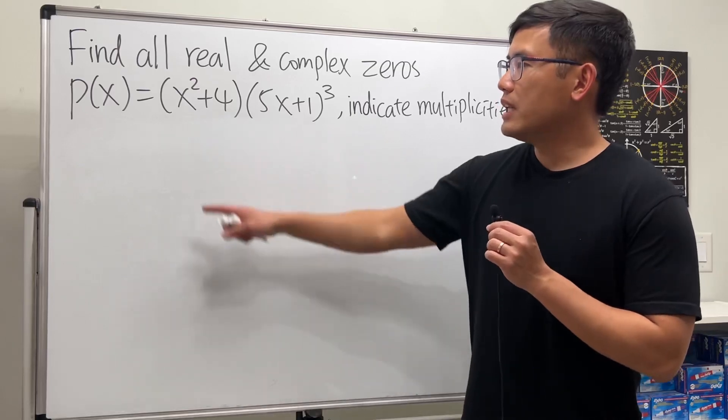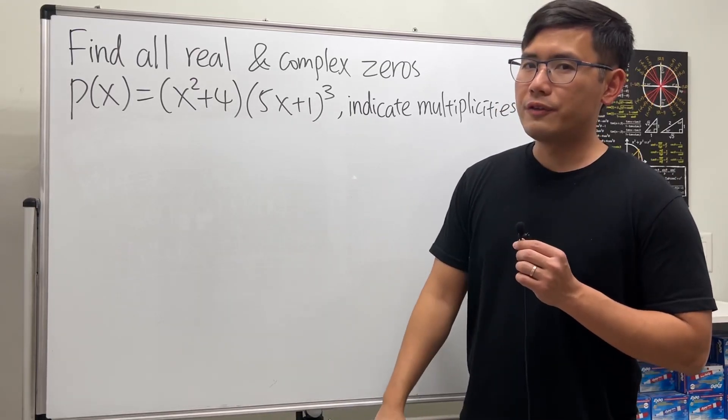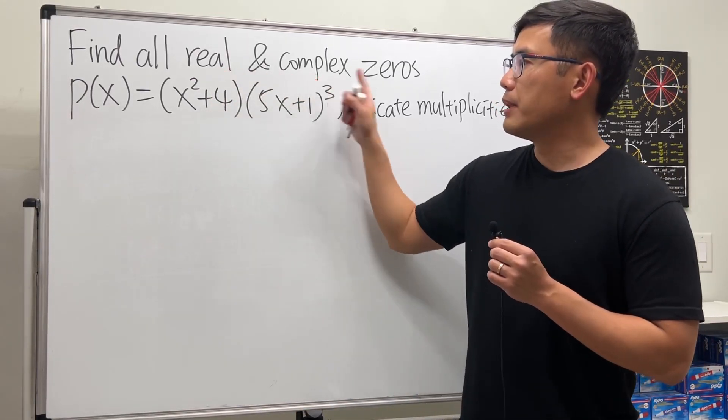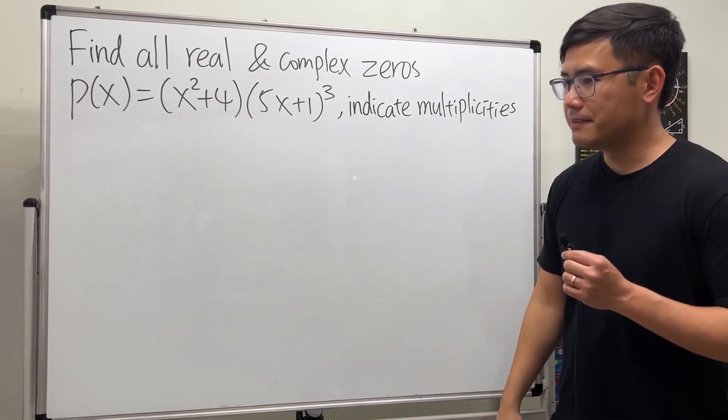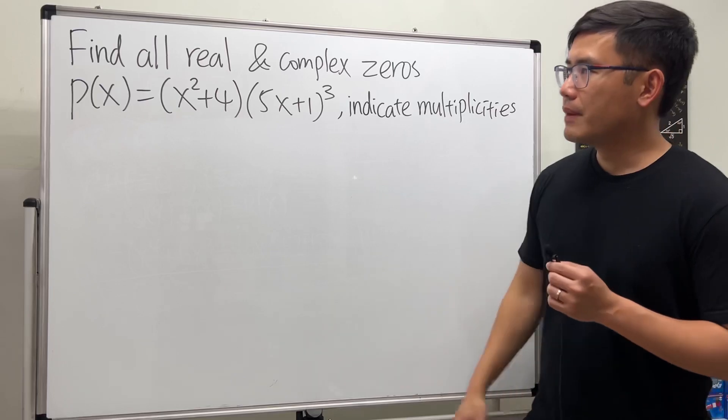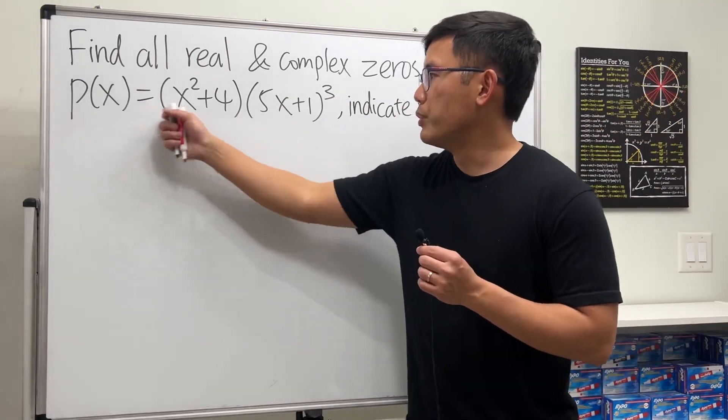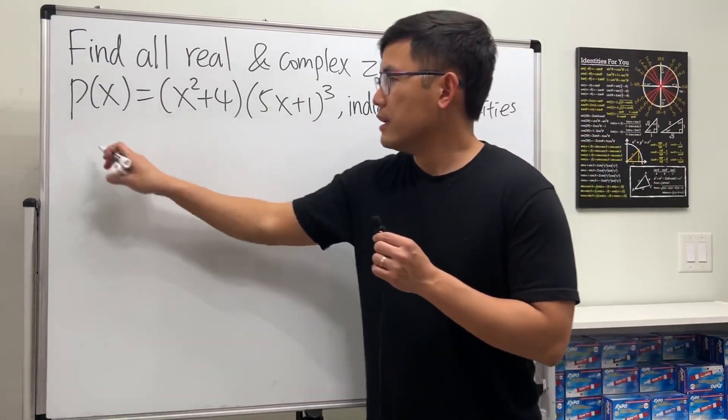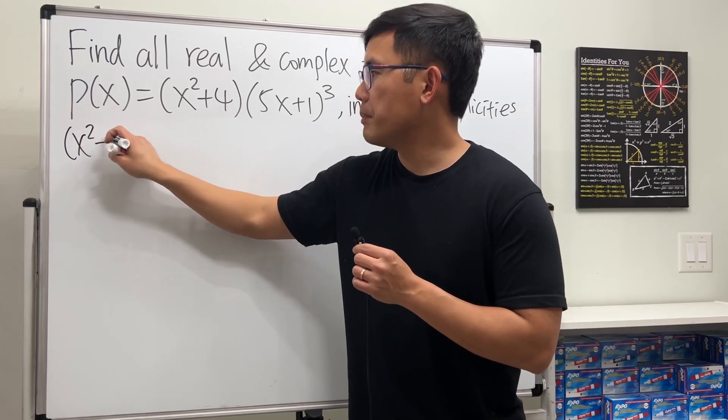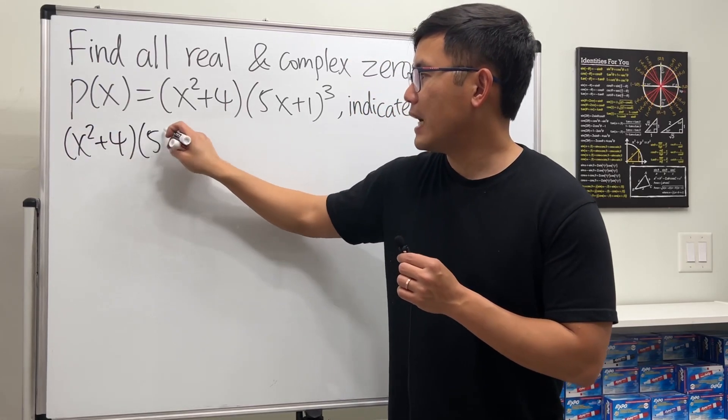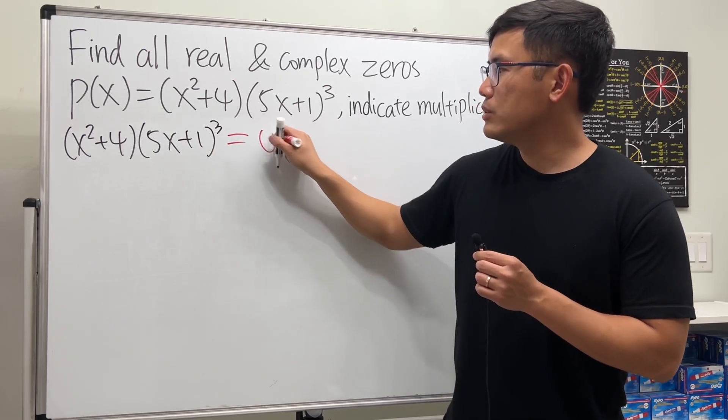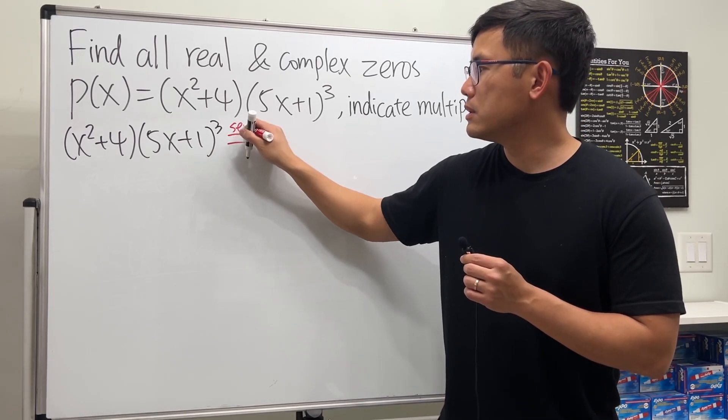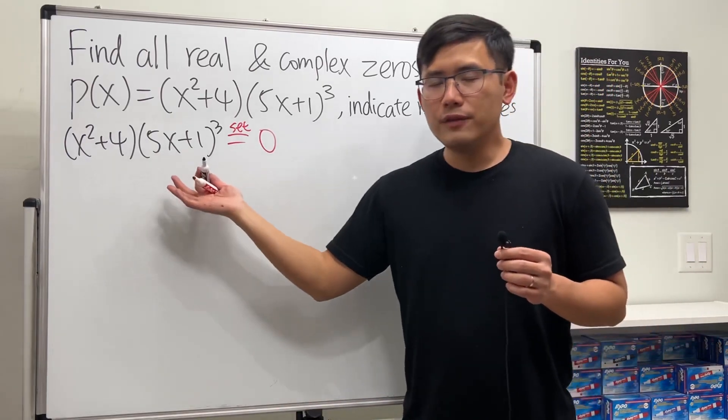Okay, this is the fun one. We are given this polynomial and we are going to find all the real and complex zeros, and we also indicate their multiplicities. I will explain this later, but to find a zero we put this to be zero and we go from there. So we are looking at (x²+4)(5x+1)³ and we set this to be zero.